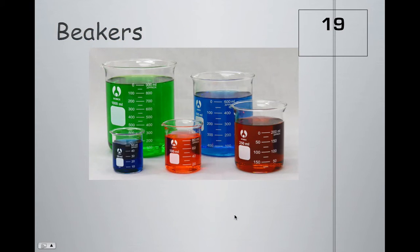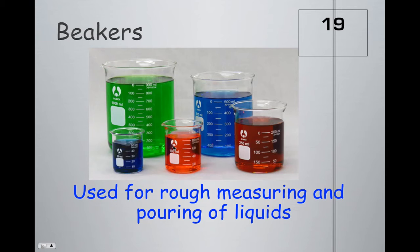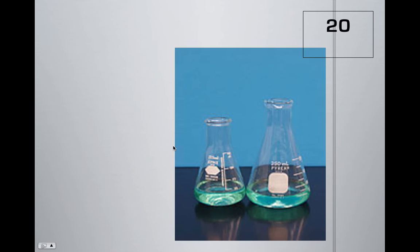These glass items are called beakers and there are various sizes, everything from small 50 milliliters all the way to 1000 milliliters. These are used for rough measuring and pouring of liquids.